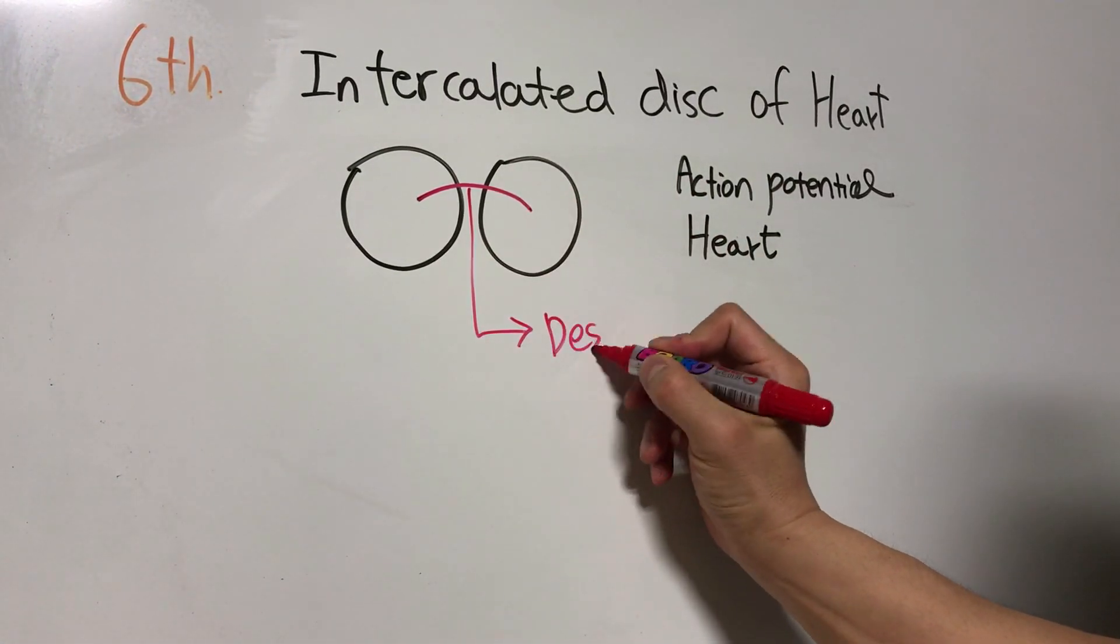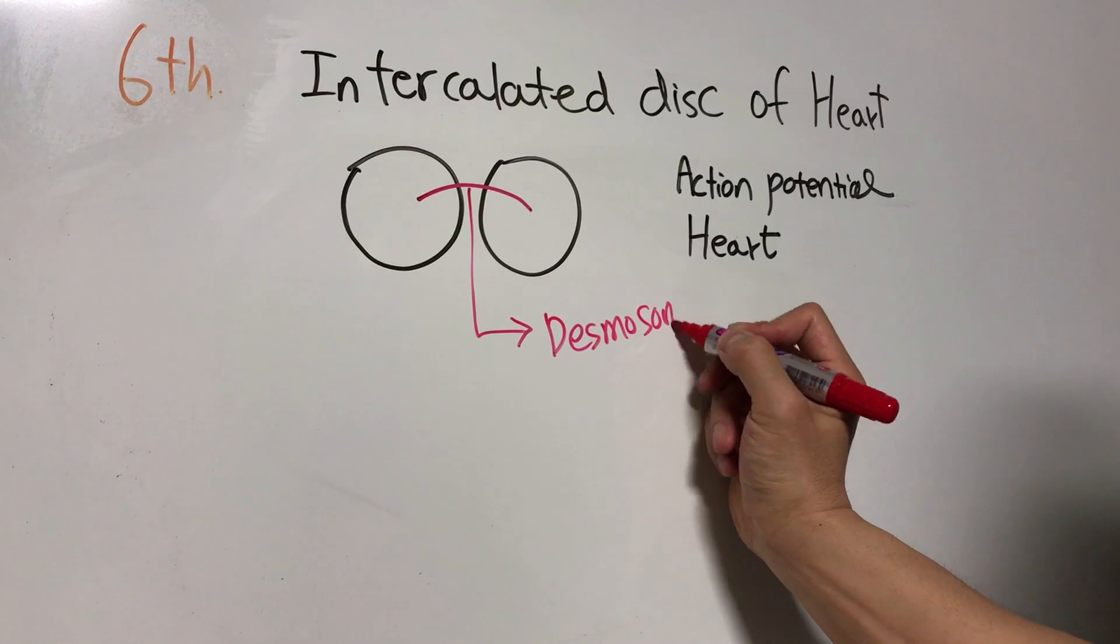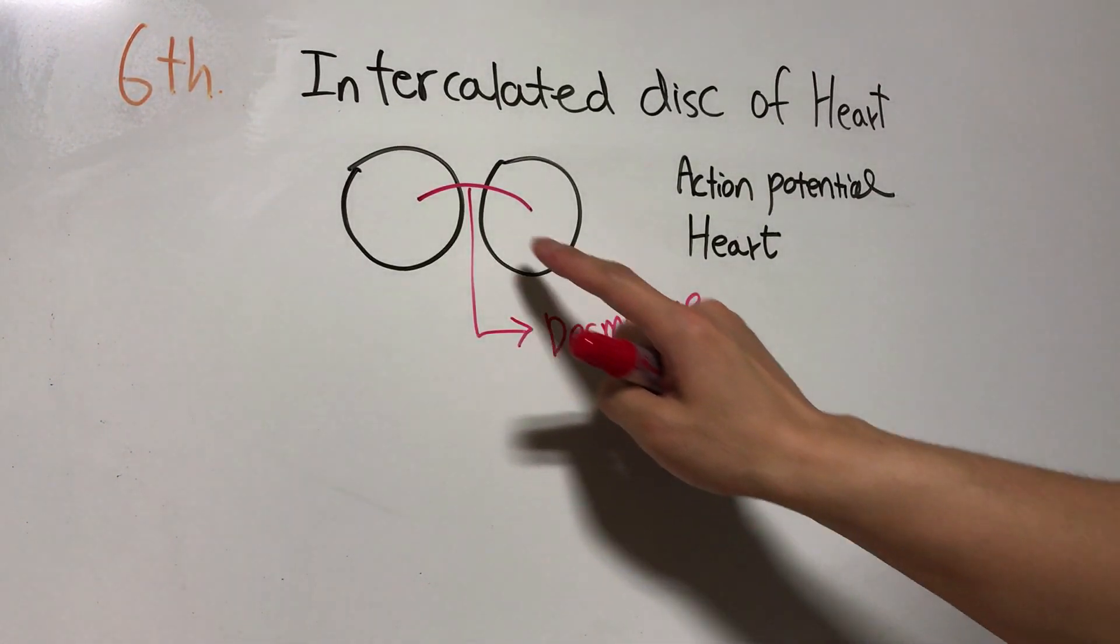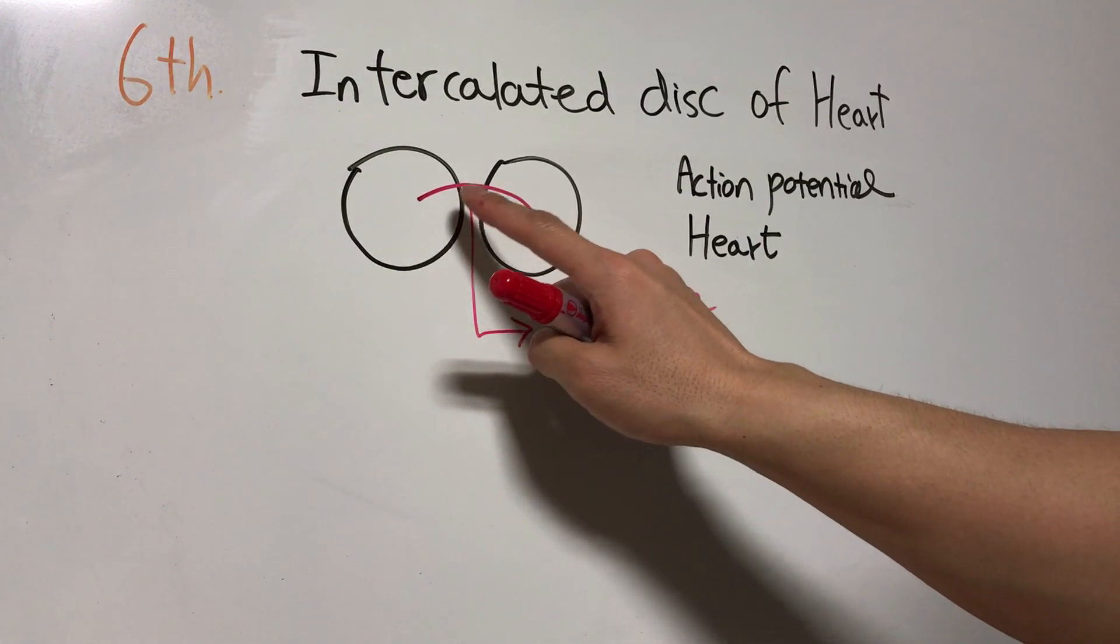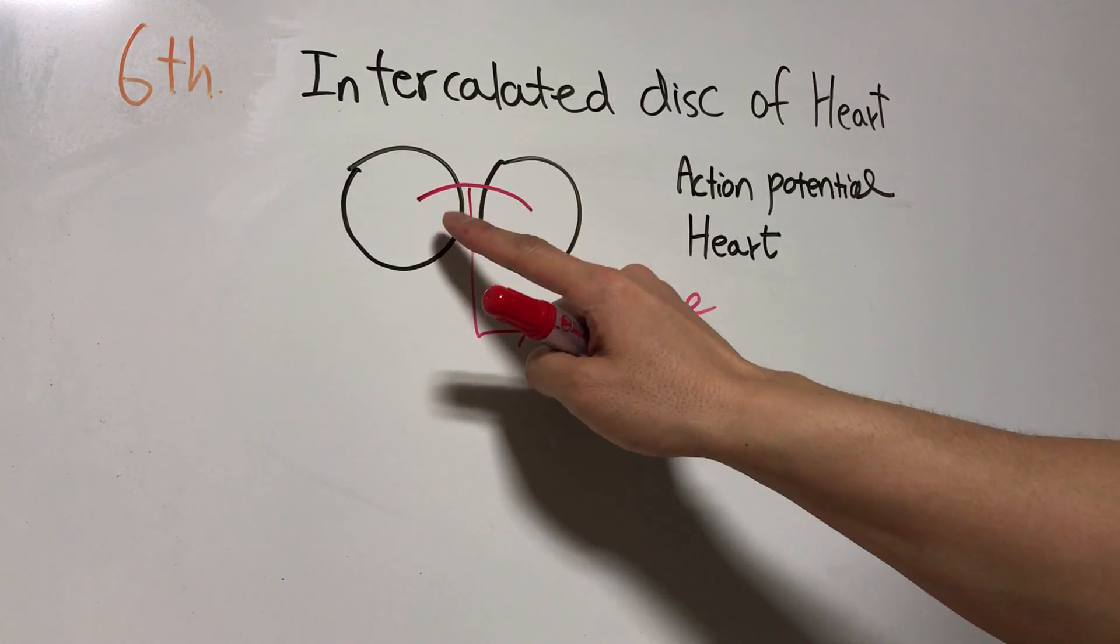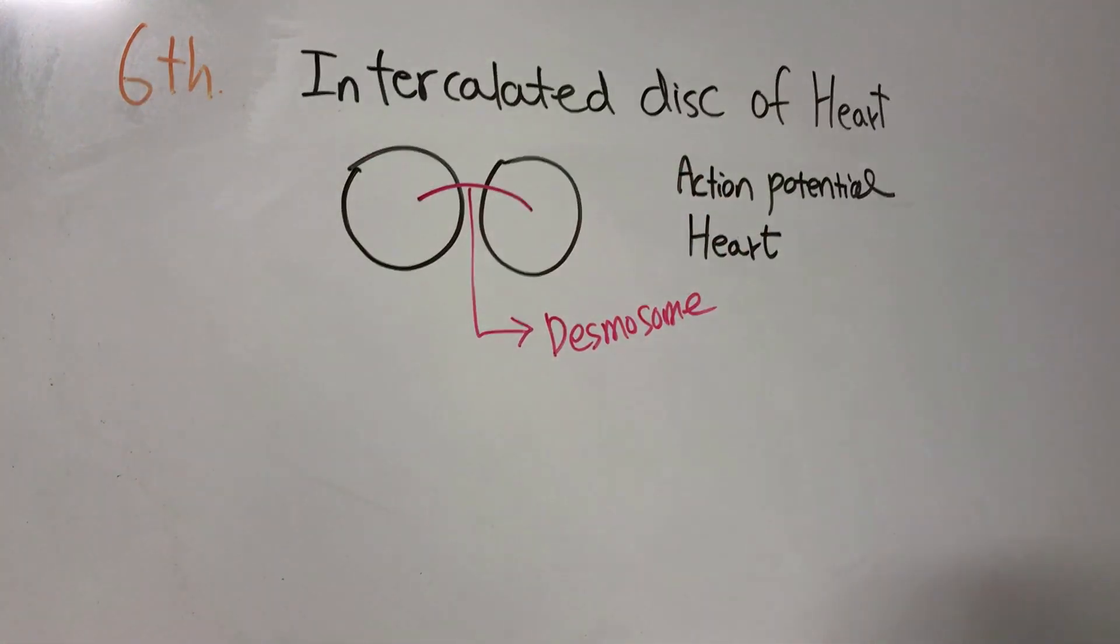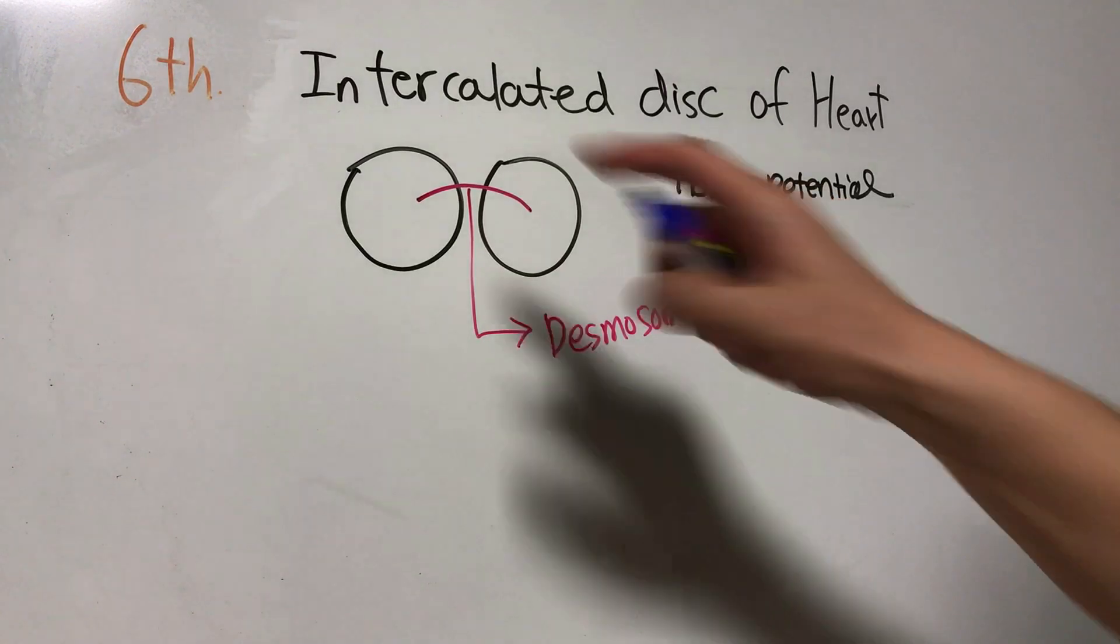The desmosome is a structure that mechanically connects myocardial cells between each other. It helps stabilize the intercalated disc.